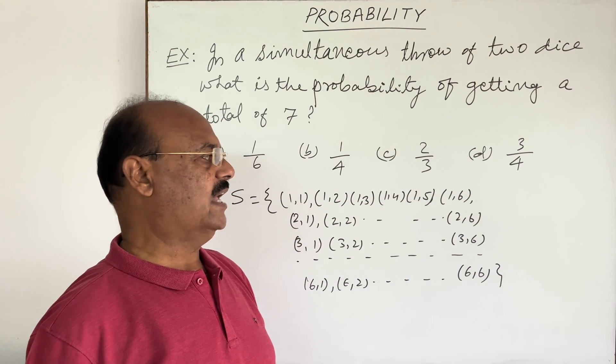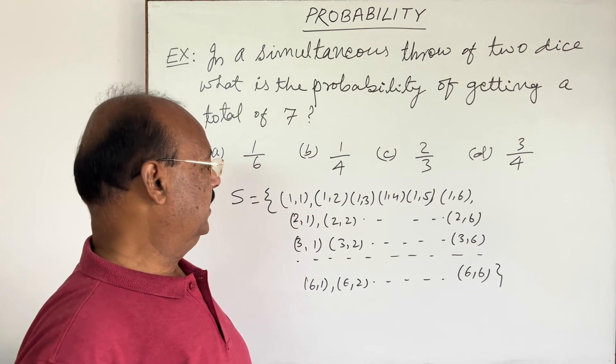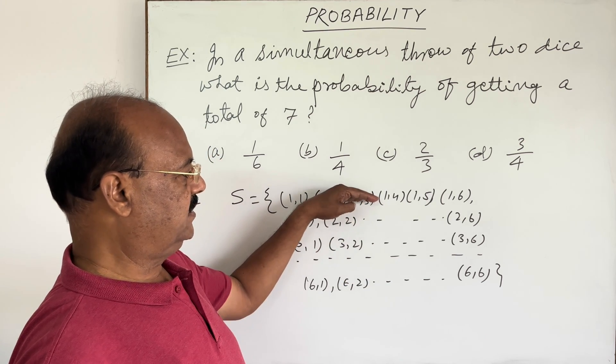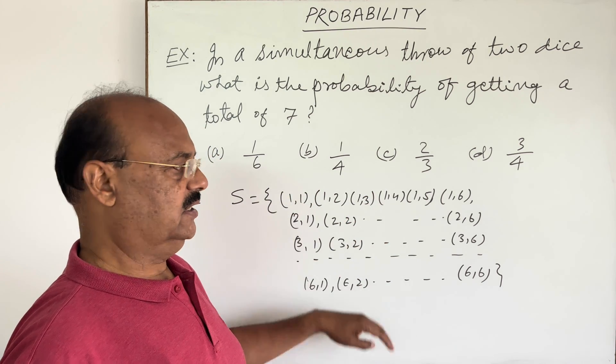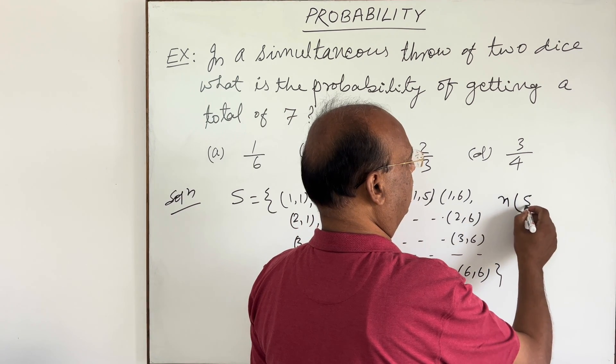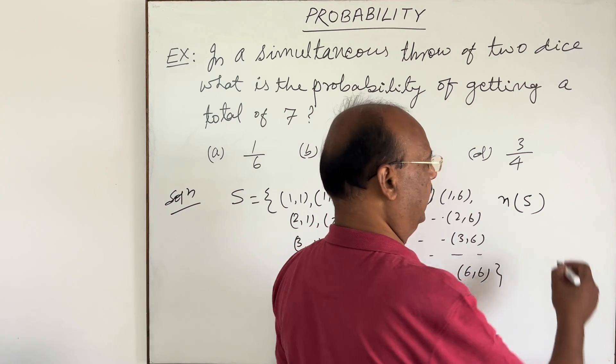So these are all the possible outcomes when two dice are thrown simultaneously. When you count all the possible outcomes, this is 6×6=36. So we can write n(S)=36.